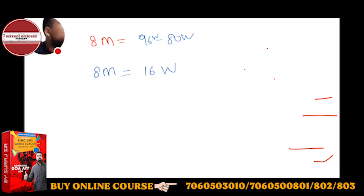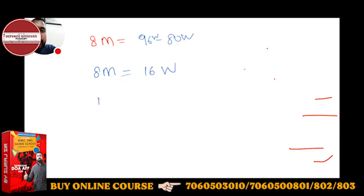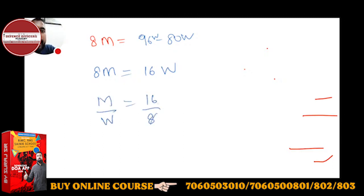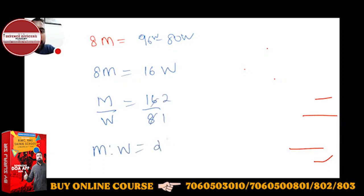You have to find the ratio of man to woman. So M/W = 16/8, which simplifies to 2/1. Therefore men to women = 2 is to 1.